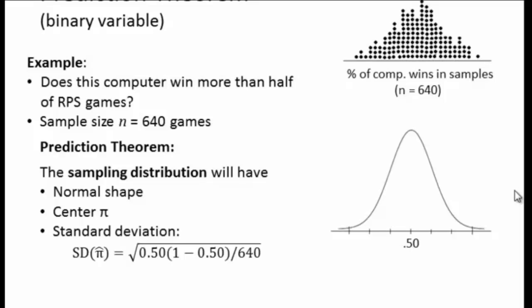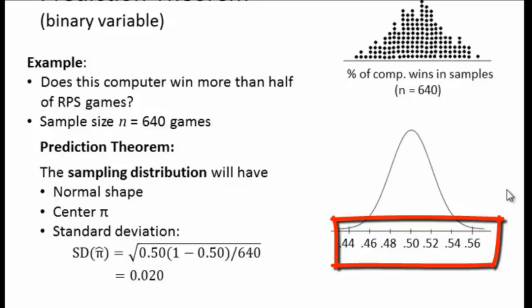The last thing that the prediction theorem tells us is that the standard deviation can be approximated from a mathematical formula, which you see here, and we'll find it to be 0.020. The reason that's important is because we learned a lot about normal distributions and how important the standard deviation is. So once we fill in the numbers, we can use the normal distribution the way we learned to in Chapter 9.